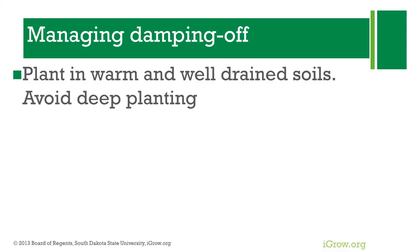Soils that are saturated with moisture provide a good environment for pathogen infection. Another method growers can use is timing of planting. Planting in cold and wet soils in spring can promote infection, especially by Pythium. So if your field has a history of seedling diseases, delayed planting when soils are a little warmer and moisture is not too high can also reduce the problem of seedling diseases.